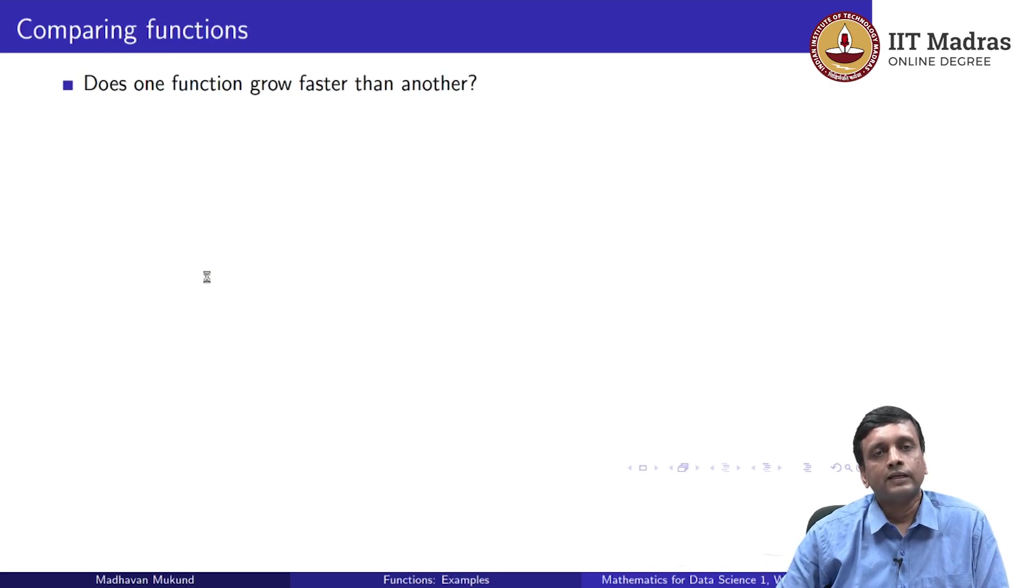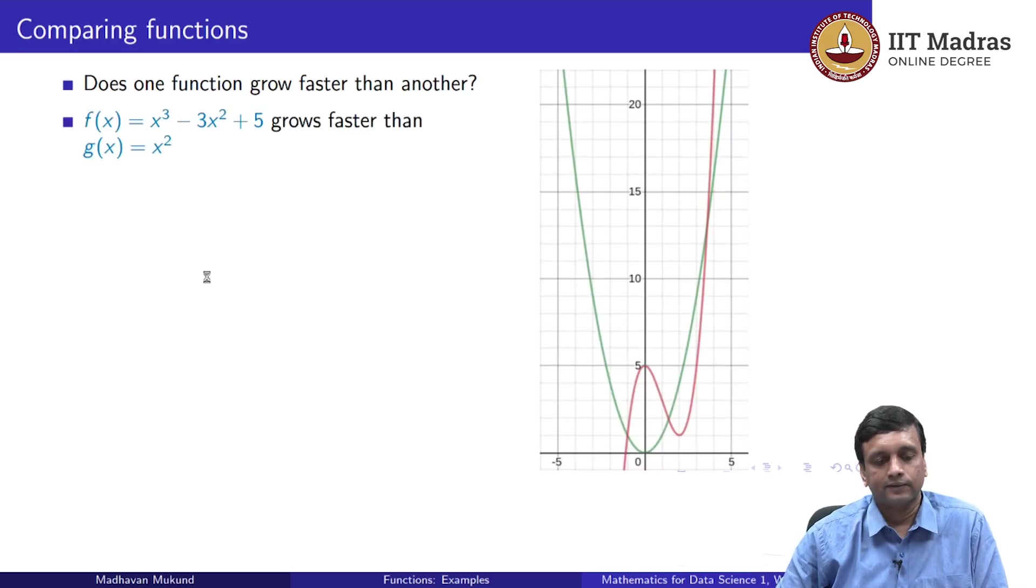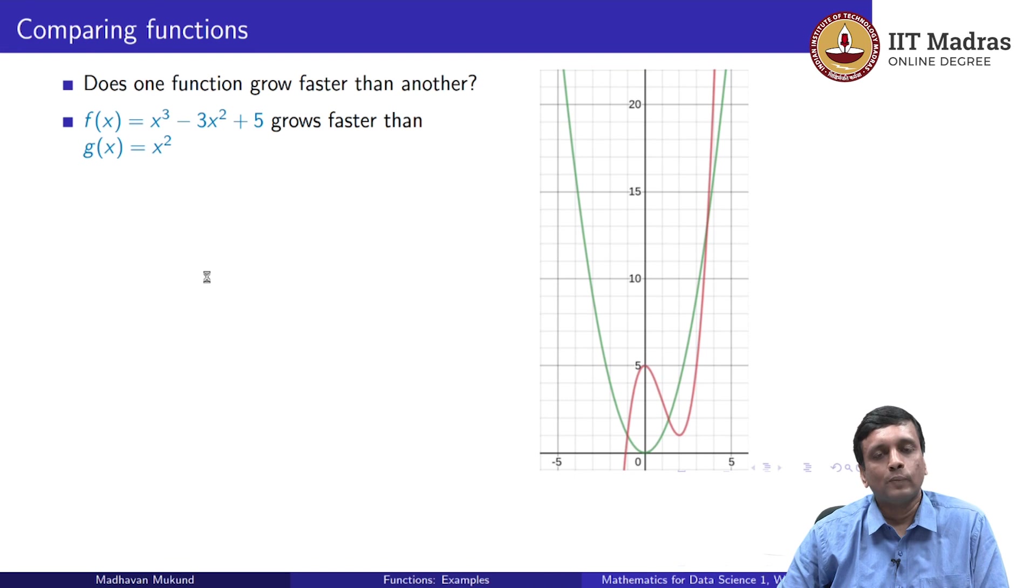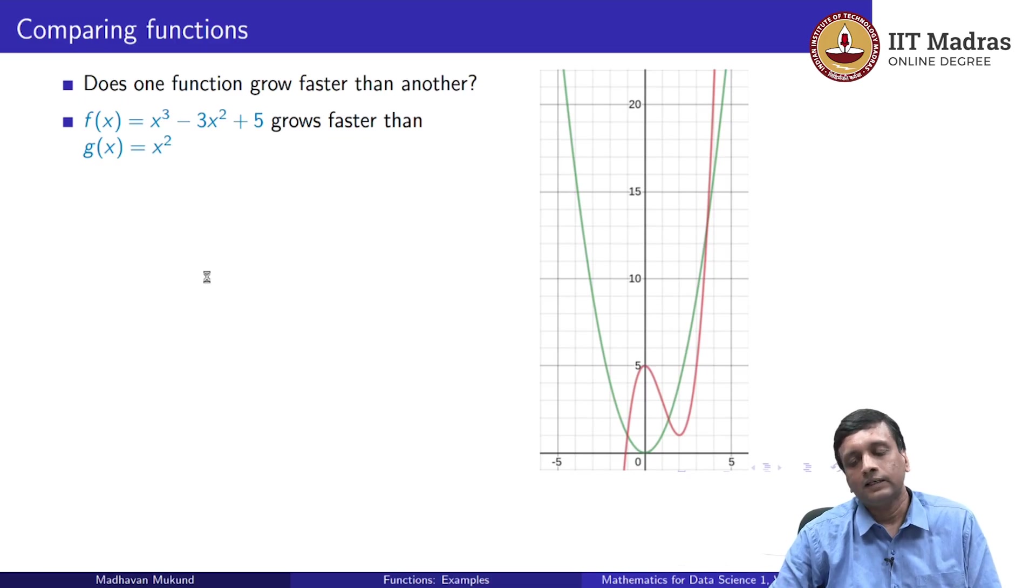Another thing which we are interested in about functions is how fast they grow. Does one function grow faster than another? So if we look at our two functions y = x² and y = x³ - 3x² + 5 and we look at their two graphs, then it is very clear that the red line, although initially on the right it is below the green line, it overtakes it and after that it is never going to be below the green line. So in this way, the cubic function grows faster than the square function.